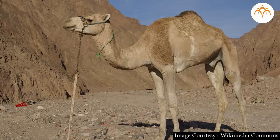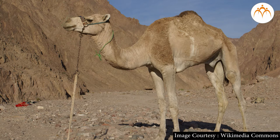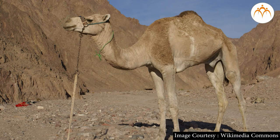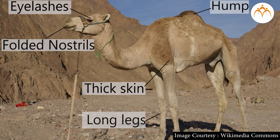Students, do you know that camel is called the ship of the desert? It is because of some unique characteristics of this animal. Have a look at the picture of this camel and try to answer some questions. How is the skin of camel? What can you say about the length of its legs? And where is the hump of camel in the picture? Camel has thick skin, long legs, folded nostrils, long and thick eyelashes and a hump.